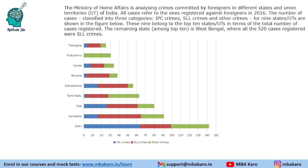Hello everyone, welcome to Aptitude JAB. This set from CAT 2019 Slot 1 DILR is based on a stacked bar graph. It says that the Ministry of Home Affairs is analysing crimes committed by foreigners in different states and union territories. All cases refer to those registered against foreigners in 2016. The number of crimes are classified into three categories: IPC, denoted by blue; SLL, denoted by red; and other crimes by green.